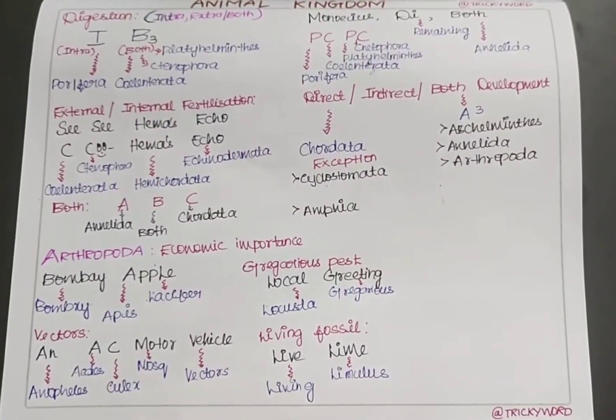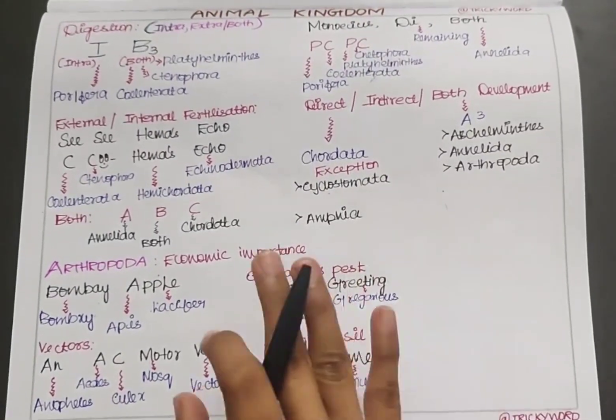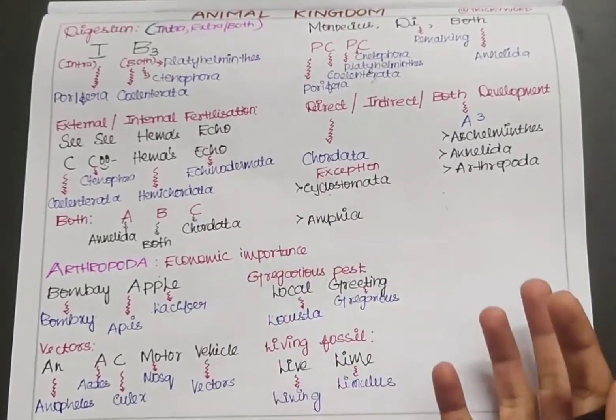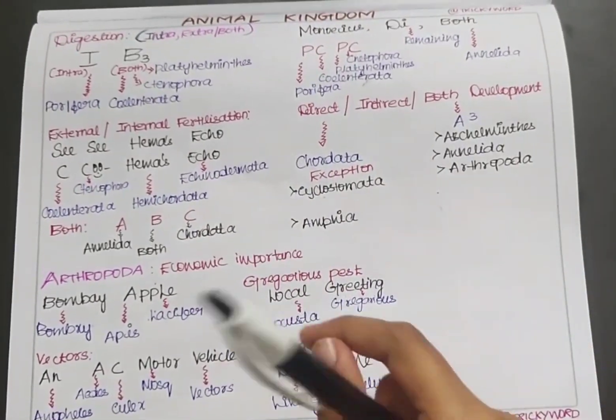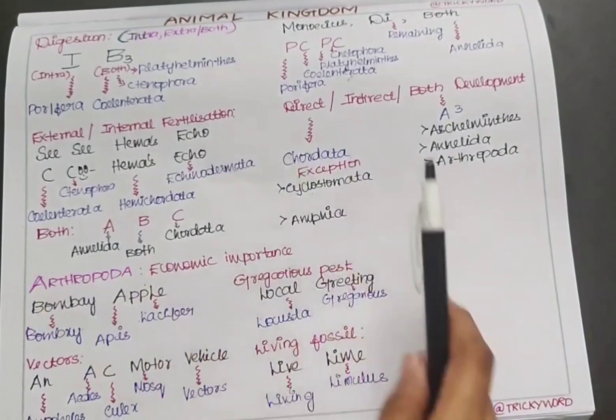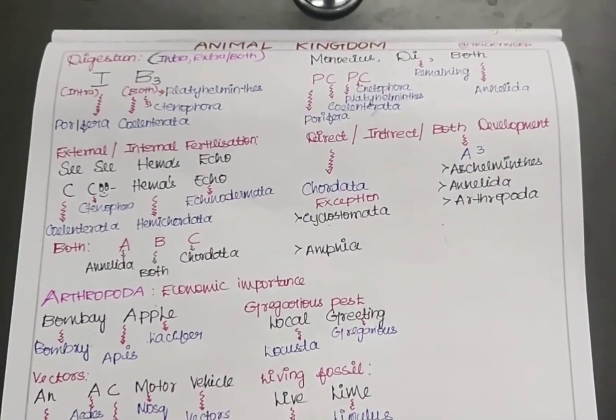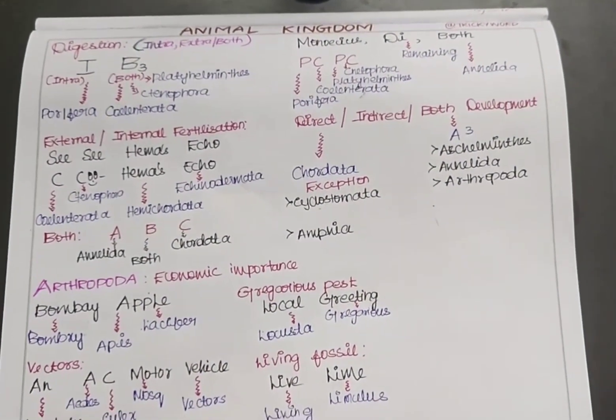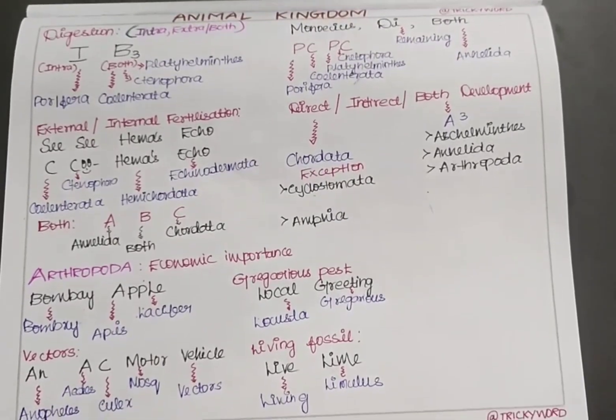Happy day everyone. This is Part 2 of the Animal Kingdom video. We will discuss examples regarding external and internal fertilization, and direct and indirect development. If you haven't watched Part 1 where I gave examples for all the phylum, please go and watch it. Let's get into the video.